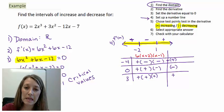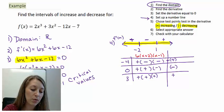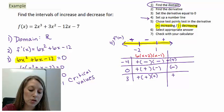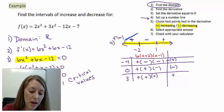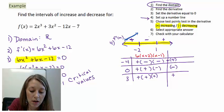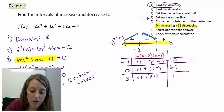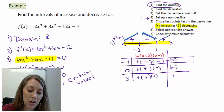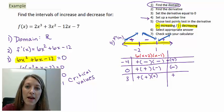To help summarize increasing and decreasing, you might use arrows. From the far left to negative 2, the graph is increasing — going up from left to right. Between negative 2 and 1, the graph is decreasing — going down from left to right. And from 1 onward, the graph is increasing again. This kind of gives you a good shape of the graph and helps you visualize what it's actually doing.